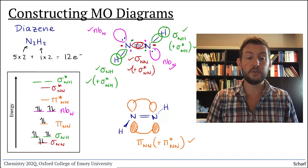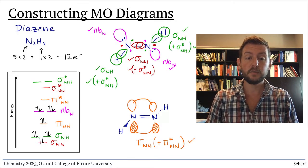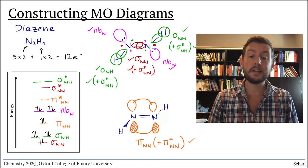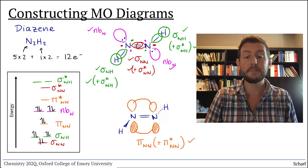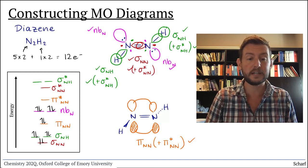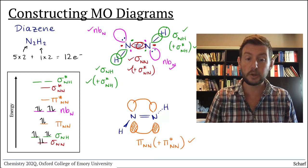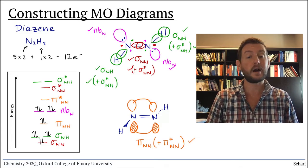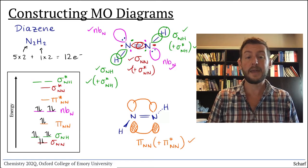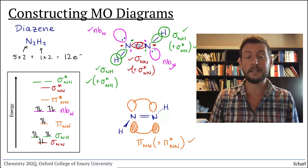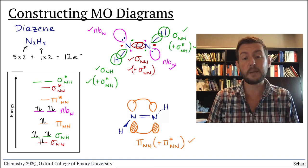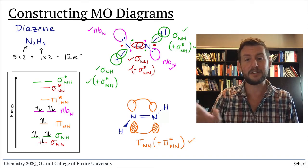We can see that we've filled two NH bonds, one N-N sigma bond, one N-N pi bond, and two non-bonding sp2 hybrid orbitals on nitrogen. Those are the lone pairs. Again, the anti-bonding orbitals are not populated. Most of the time, anti-bonding orbitals aren't populated in stable molecules. They don't get much use until we start doing chemical reactions, and that's a topic for another day.